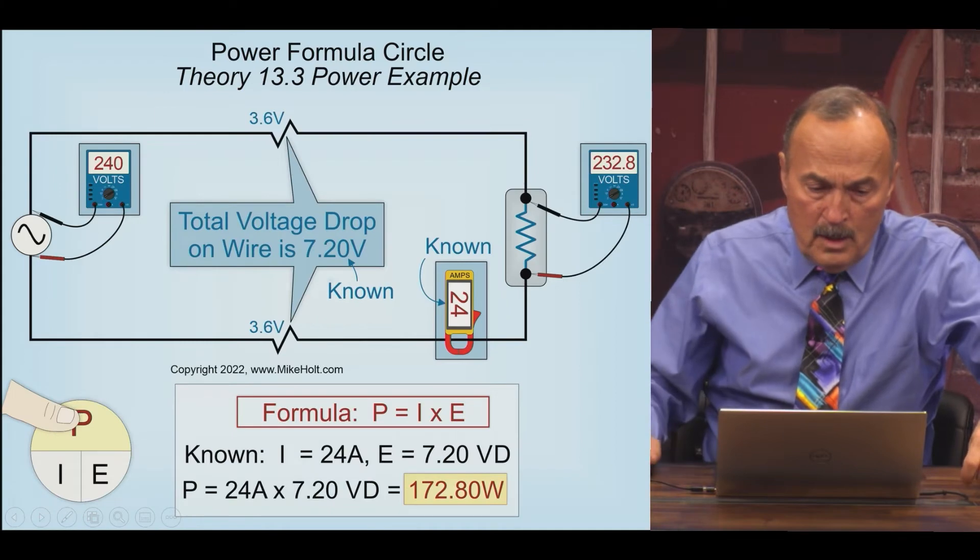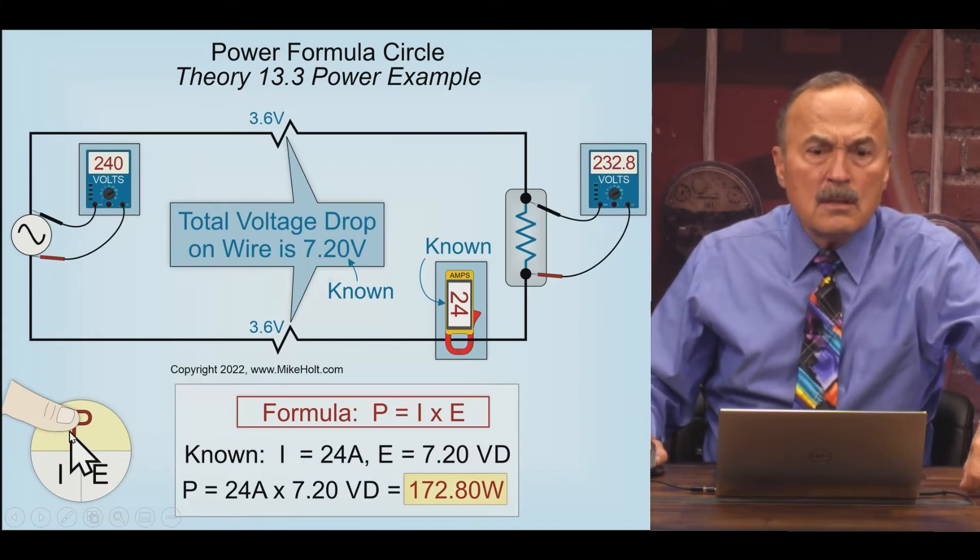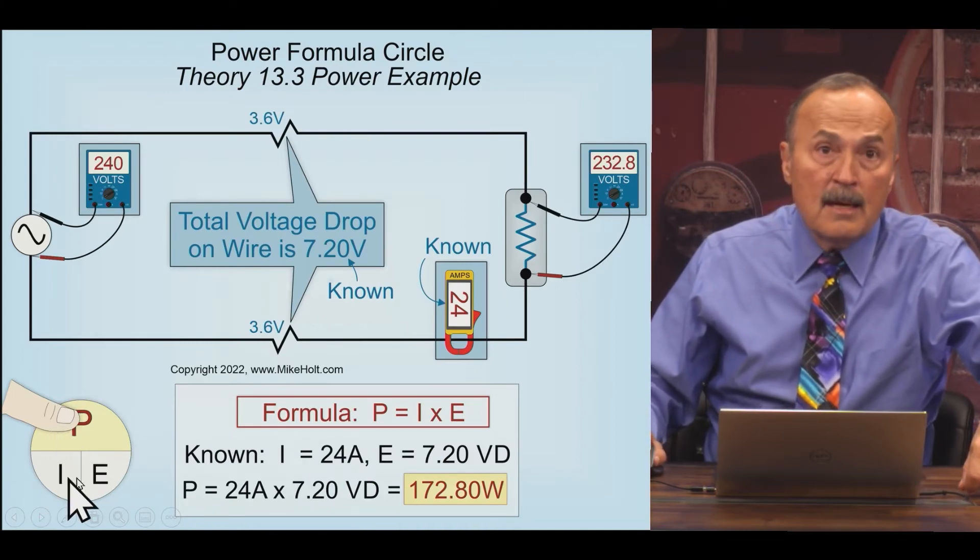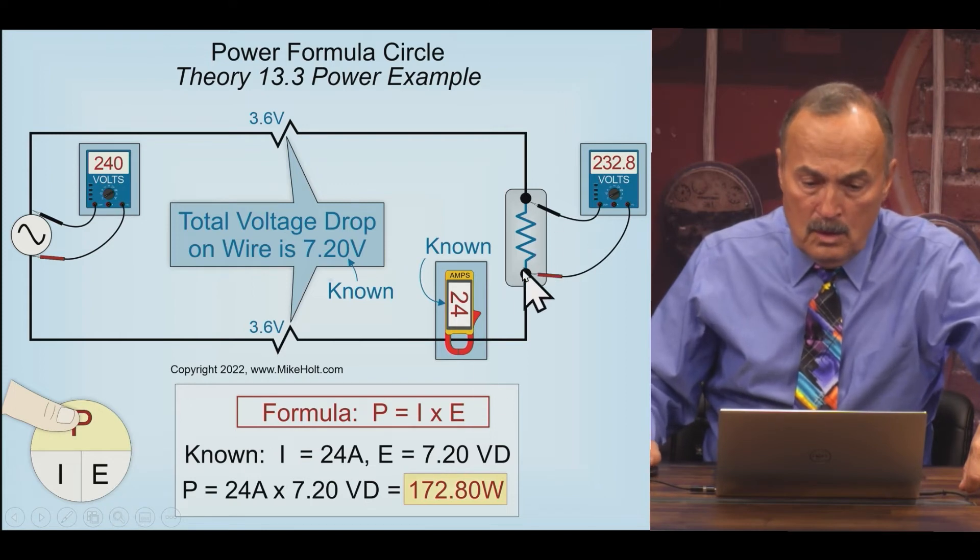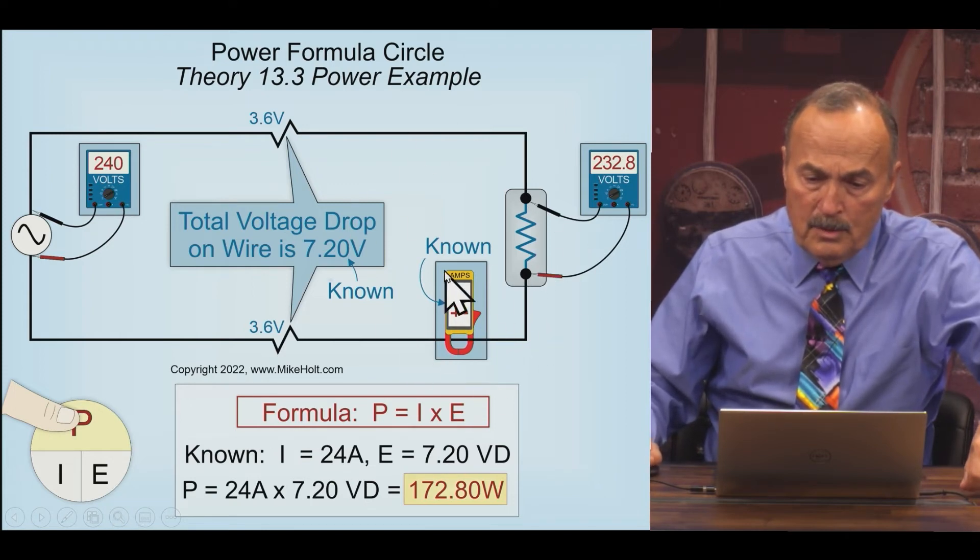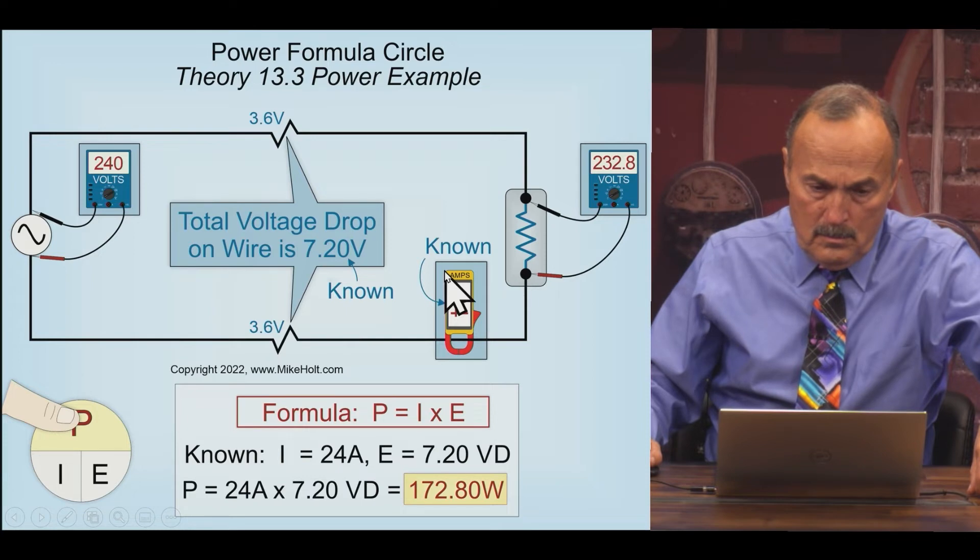Here's another one. All right, we're looking for, what's the power of the circuit? Well, the power is equal to the intensity times the electromotive force. The intensity is the amperes. It was given as 24 amperes times the EMF.